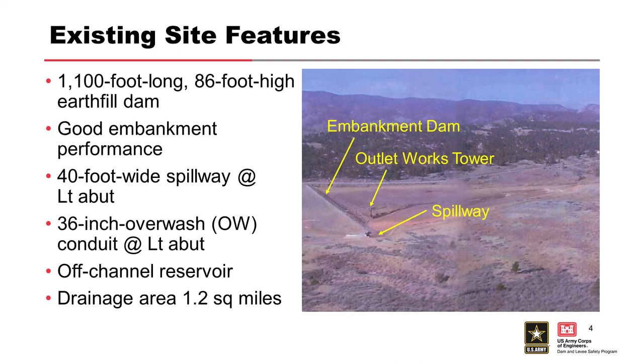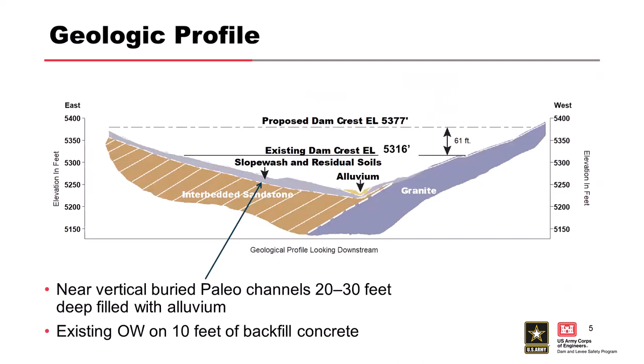The photo shows the spillway off on the left abutment. There's a little tower and a bridge for the outlet works, and the crest of the dam is visible. For perspective, this was the county highway that had to be relocated.